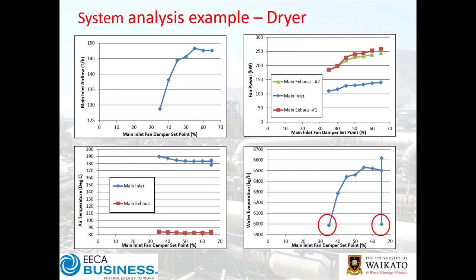There were some interesting effects on temperature going into the dryer. Crucially, there was also a substantial drop in the exhaust fans — in excess of 100 kilowatts in power savings. For an around-the-clock plant, that's substantial. The irony of course is that not only could you get those power savings, you could also get an increase in capacity.